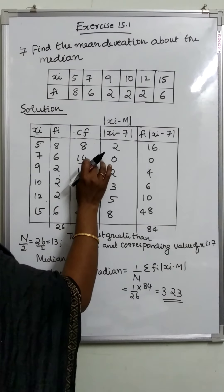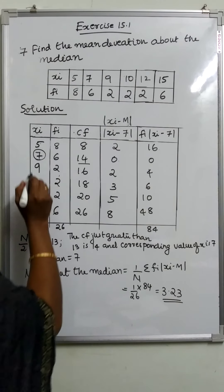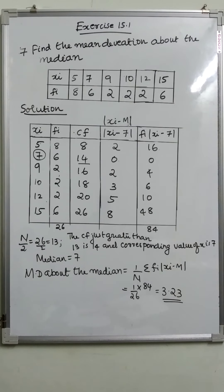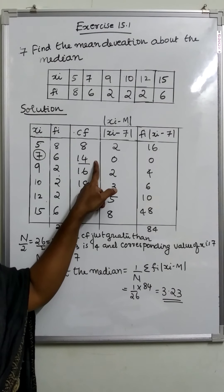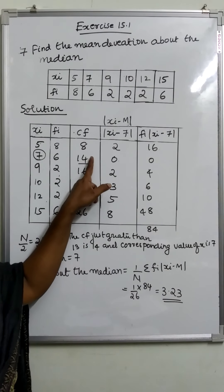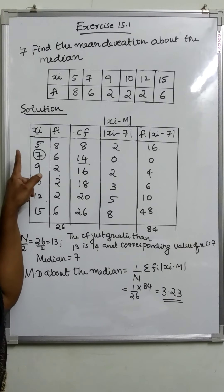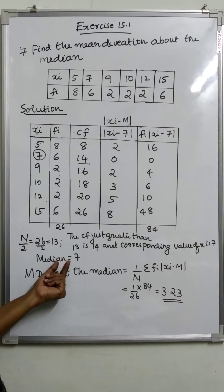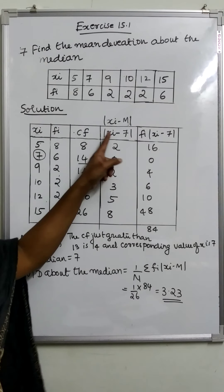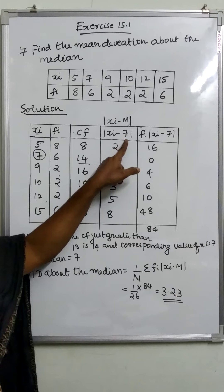That value is taken as the median. 13 is compared to the value 14, that is the median. The median is equal to 7.